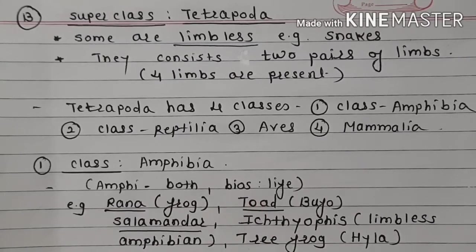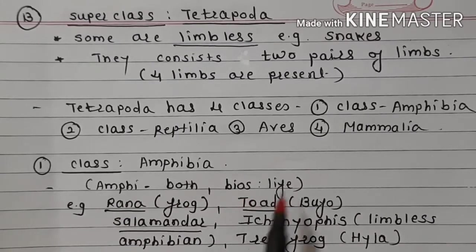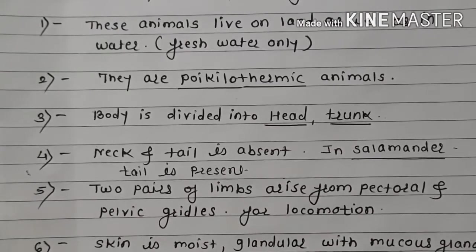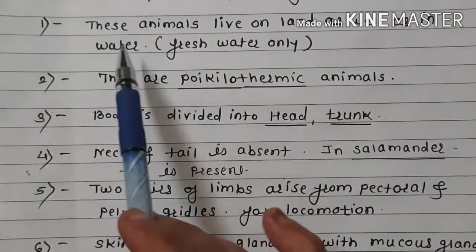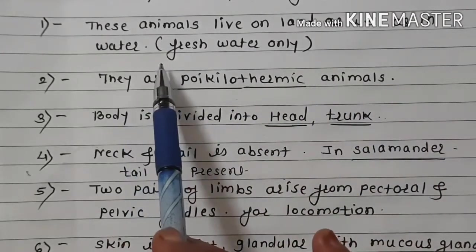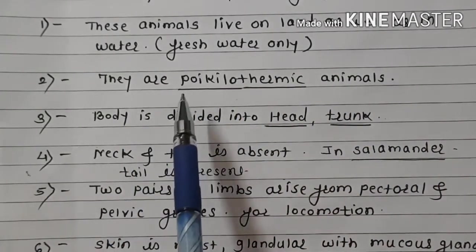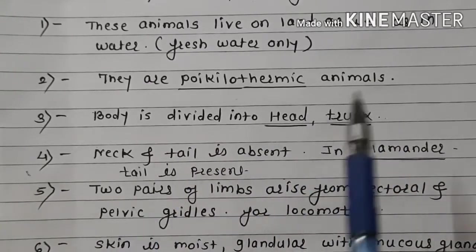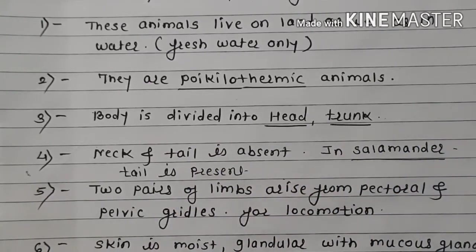Class Amphibia: Amphi means both, bios means life. Examples: frog, toad, salamander, tree frog, etc. These animals live on land as well as in water — only fresh water. They are poikilothermic, that is cold-blooded animals.